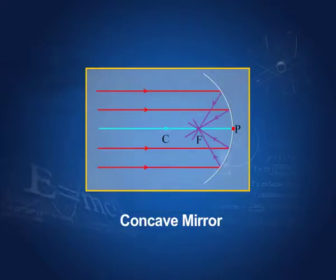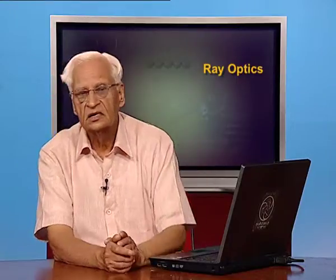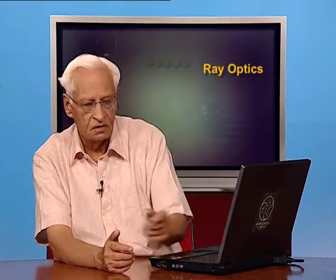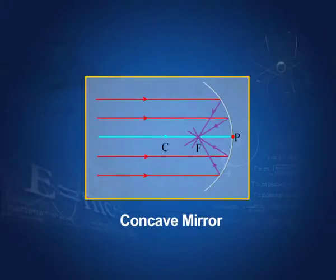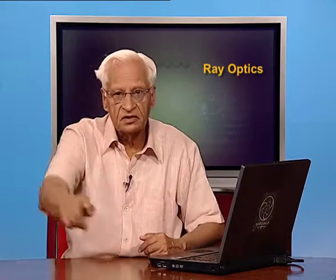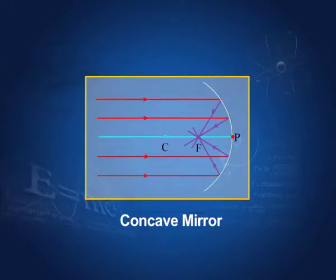Why is the focal length negative? Because we assume the light to come from the left and get reflected from the mirror, meeting at the point F. All distances are measured from P, the pole of the mirror. Distances measured to the right are negative and to the left are positive. So PF is negative, and therefore the focal length of a concave mirror is negative.